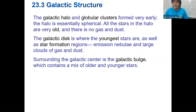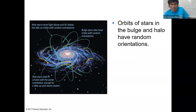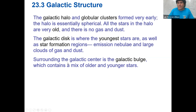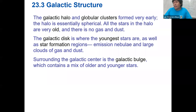The galactic halo and globular clusters formed very early. The stars in the halo are very old, and there is almost no gas and dust there — it's either been taken by stars being formed or expelled toward the arms. That's good for us because that's where we have molecular clouds when they cool, which leads to star formation.